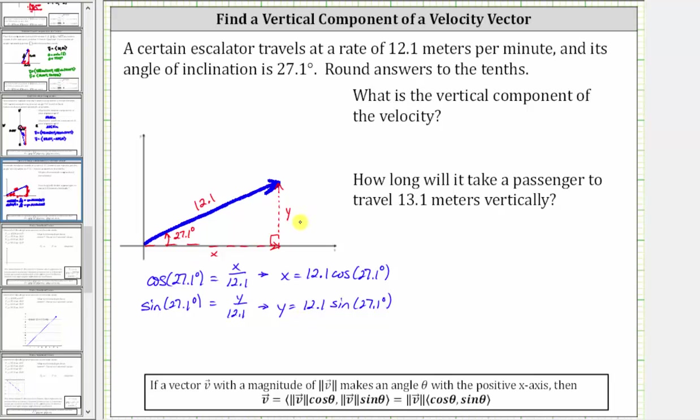And now by finding x and y, we can determine the x and y components of the given vector. We could have found this a little bit faster by using the equation shown below, where if a vector v makes an angle theta with a positive x axis, then the x component is equal to the magnitude of v times cosine theta, which is what we have here, and the y component is equal to the magnitude of v times sine theta, which is what we have here.